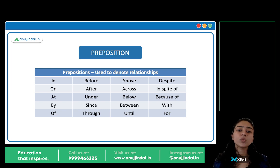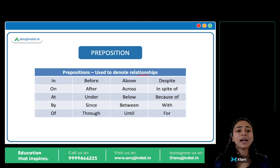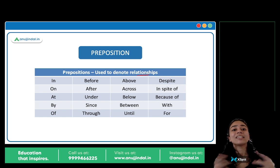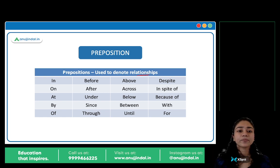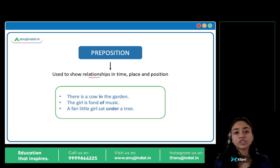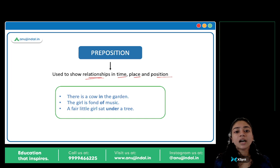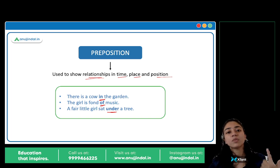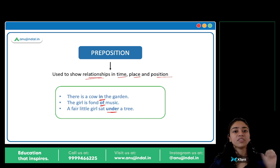Next: preposition. Prepositions are used to denote relationships — to denote a relationship between two words. So: in, on, at, by, off, before, after, under, since, through, above, below, between, despite, in spite of, because of — yeh sare prepositions hai. Prepositions are used to show relationships in time, place, and position. 'There is a cow in the garden.' 'The girl is fond of music.' 'A fair little girl sat under the tree.' So in, of, under — any word which denotes a relationship of time, place, or position is a preposition.